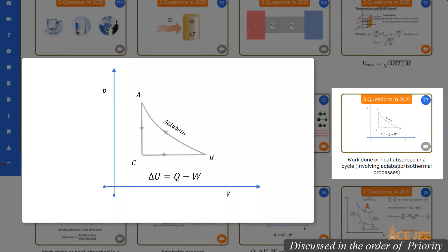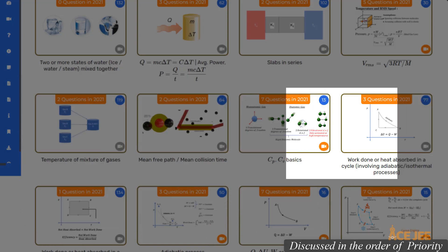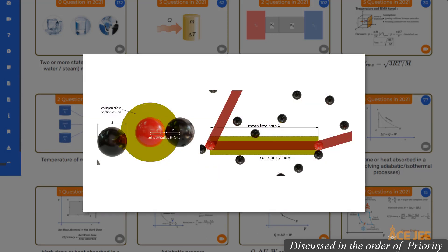In the next one, you will be asked to determine the work done or heat absorbed during the complete cycle or during part of the processes for a gas undergoing cyclic, adiabatic, or isothermal processes. In the following one, you will be asked to determine either the mean free path or mean time between collisions for a gas with a given molecular diameter and given number of particles per unit volume. Fairly simple and straightforward — read through the notes and practice a few questions.